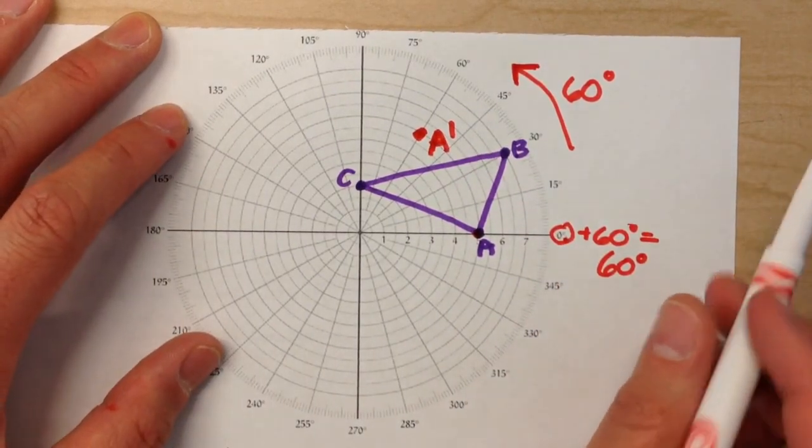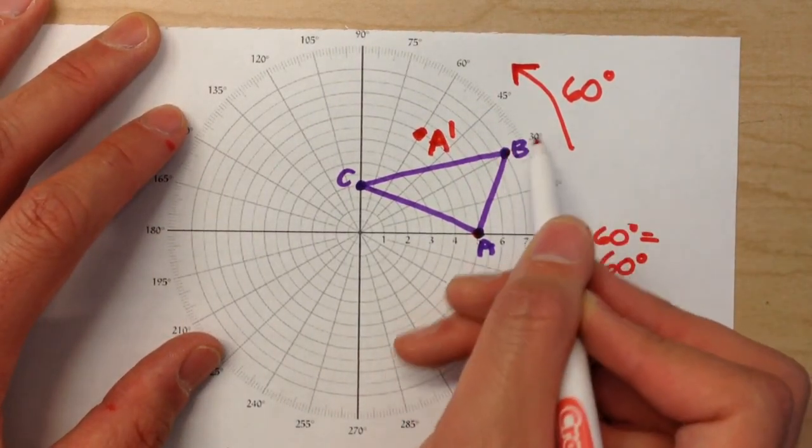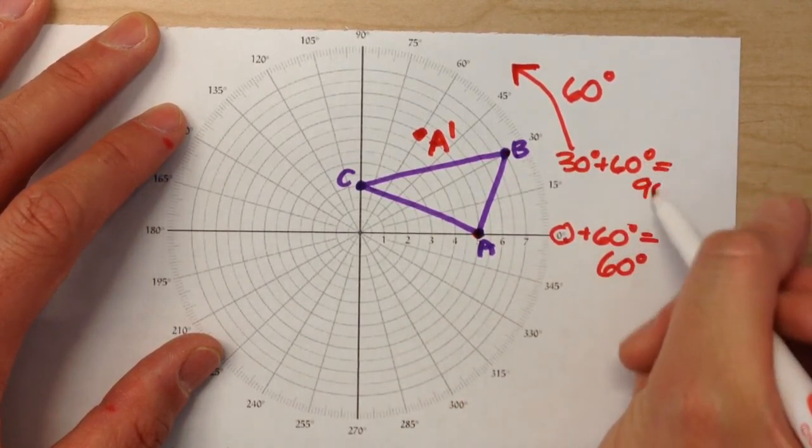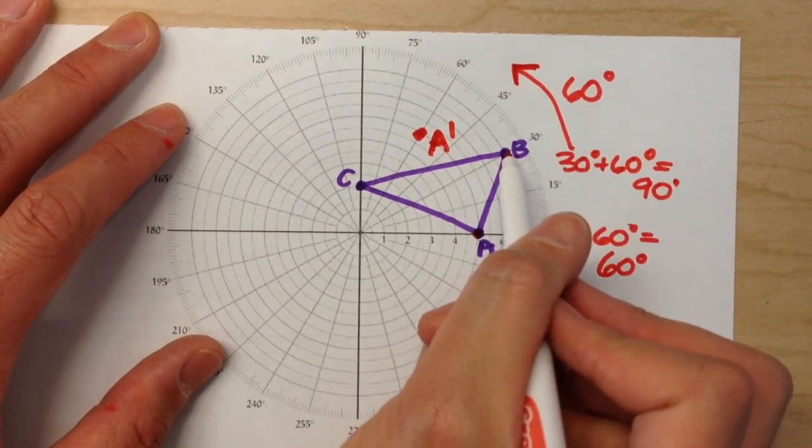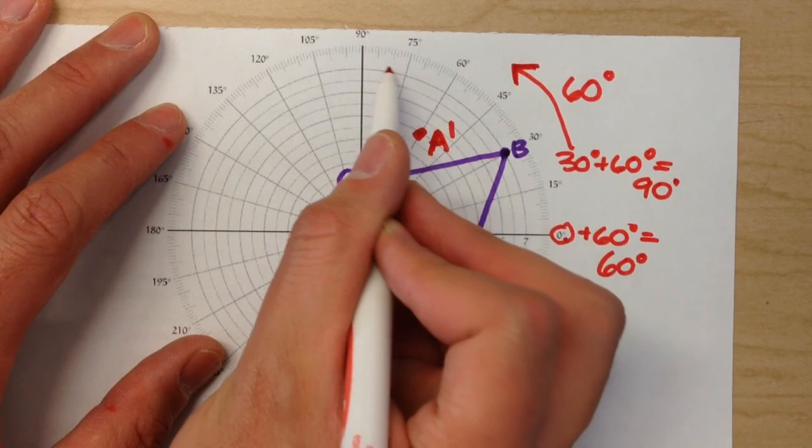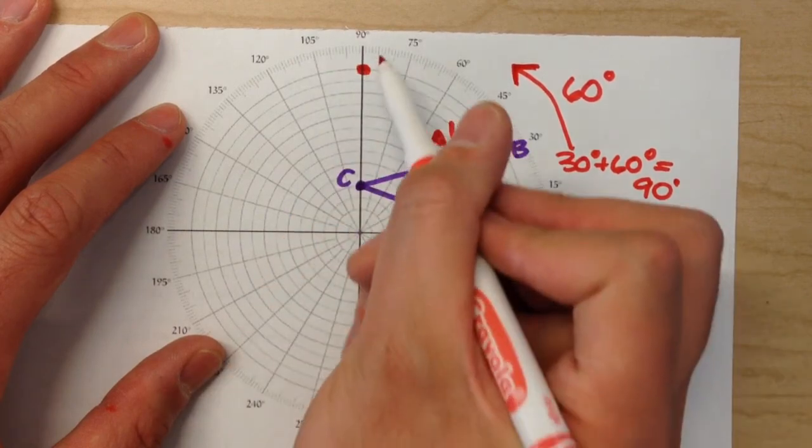And do that same thing with the other points. B is at 30 degrees. 30 plus 60 is 90. So this point should end up at the 90 degree angle marker. Follow the line. 90 degrees. There's B prime.